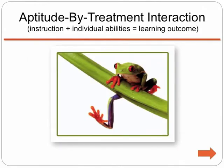The major premise of research on individual difference is that instructors should adapt instruction to accommodate differences in individual abilities, styles, and preferences. By doing this, it is expected that learning outcomes will improve. Researchers call this aptitude-by-treatment interaction. It simply means that the instruction interacts with individual abilities to produce learning outcomes.